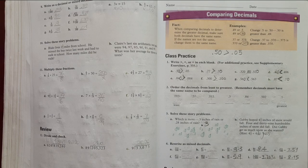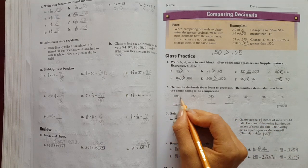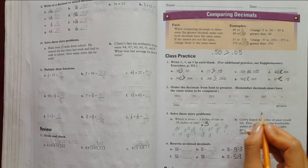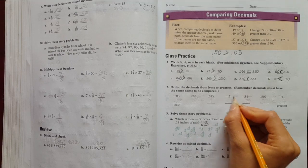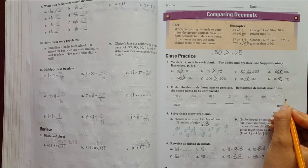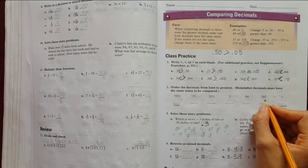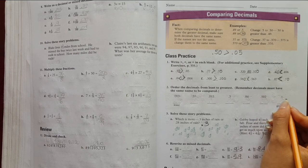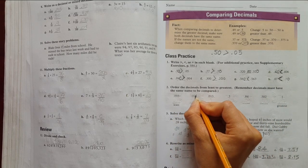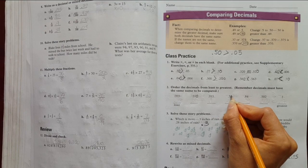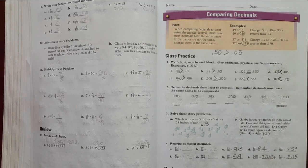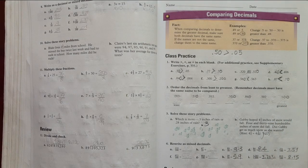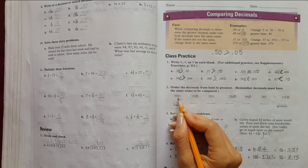Yes, point fifty. Lo que pasa es que yo le agregué aquí un cero para que se vea, para que tenga la misma cantidad de números que el otro. Here seventy-seven and here is seven, so I'm going to write a zero. Así los igualo, aquí hay dos y aquí también hay dos números. Now which one is greater? Point seventy-seven or point seventy? Point seventy-seven. Here I'm going to put a zero here, one, two, three, one, two, three. So now which one is greater? No one because they are equal. Punto trescientos veinte, punto trescientos veinte. Here, cuál es más grande? Punto cuatrocientos seis.